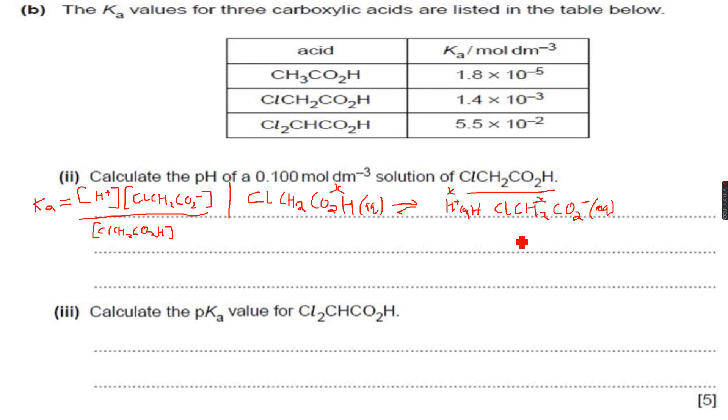the 2-chloroethanoate ion, the concentrations are the same which is x so I can say that Ka is equal to H plus squared because the concentration of H plus is the same as the concentration of the 2-chloroethanoate ion over the concentration of Cl, CH2, CO2H which is the acid 2-chloroethanoic acid.